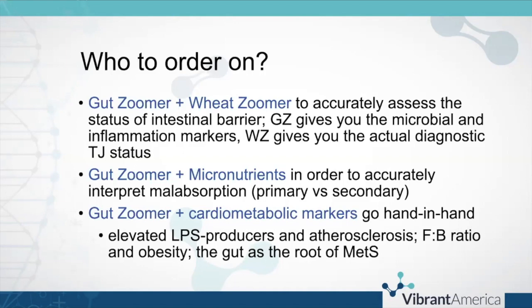GutZoomer and cardiometabolic markers: LPS producers and endotoxemia are a huge piece of atherosclerosis and cardiovascular inflammation. The Firmicutes to Bacteroidetes ratio and obesity is significant, as well as the gram-negative to gram-positive balance. If you see an abnormally high number of gram-negative bacteria elevated, that may be a signal to look deeper at where the microbiome is at the root of metabolic syndrome.